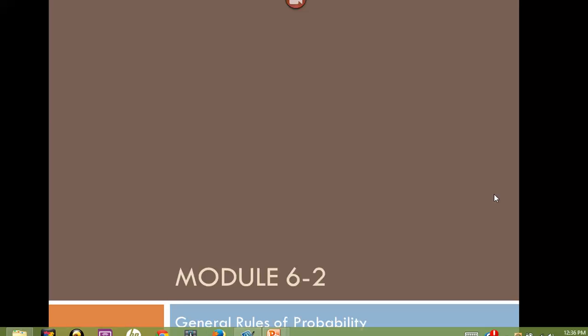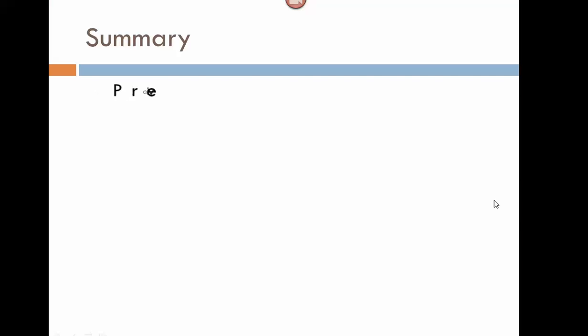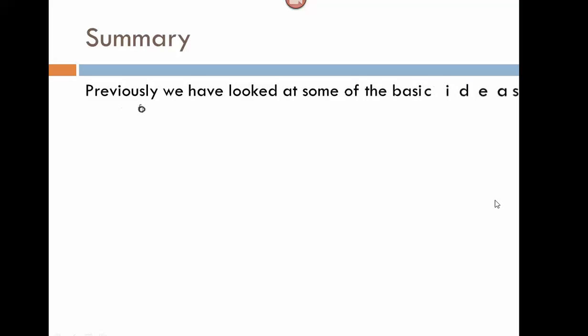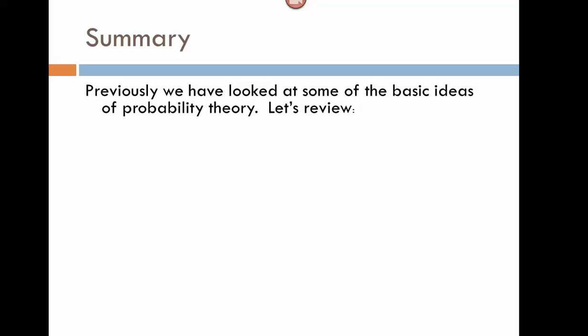Now that you've had a chance to practice some of the basic rules, we're going to expand upon that and look at some more rules that surround probability and certain situations that may occur. Let's do a quick summary of all the basic ideas of probability that we've looked at so far.